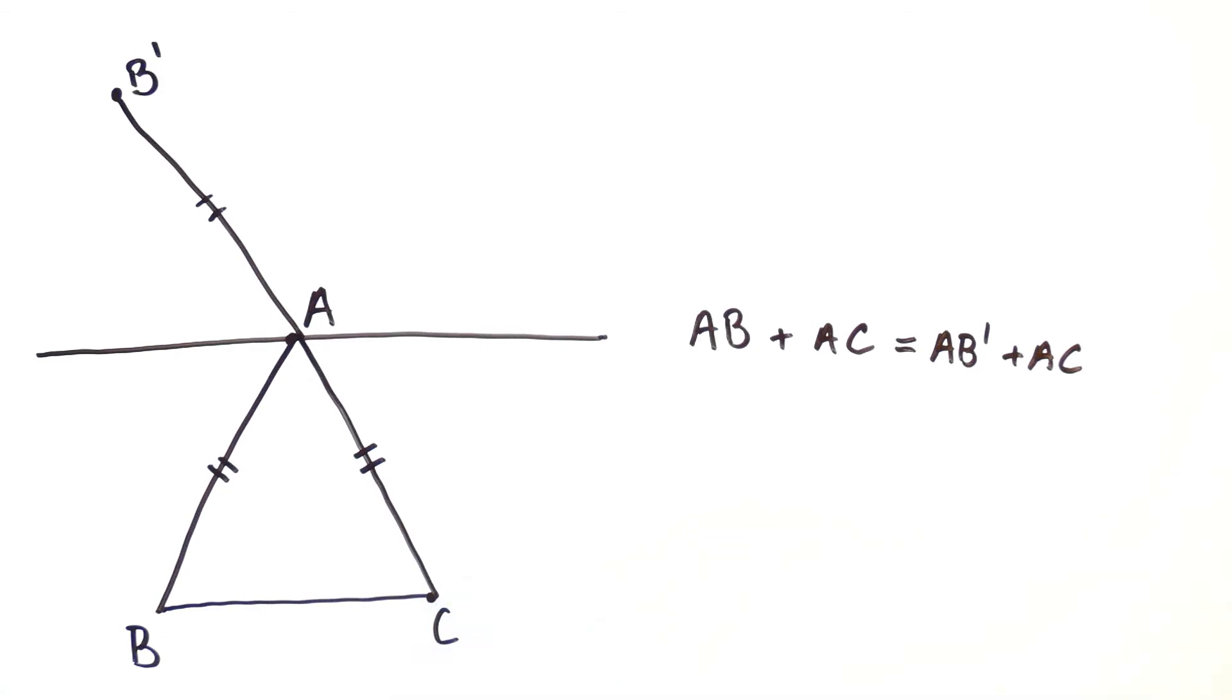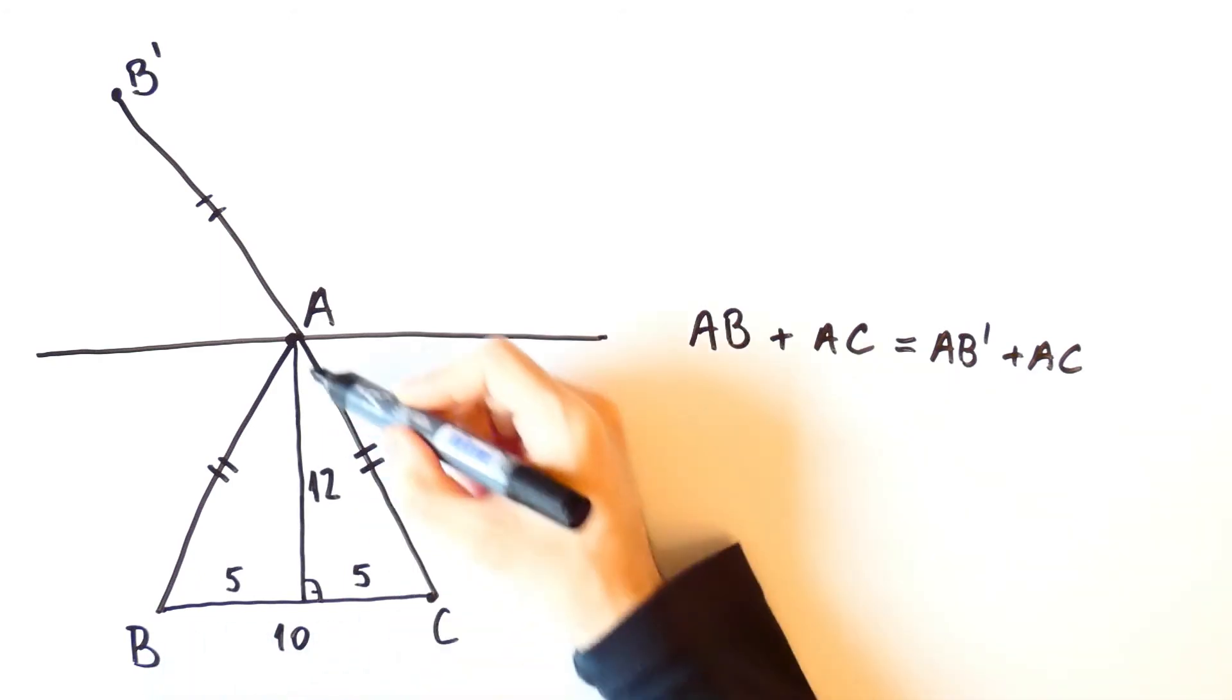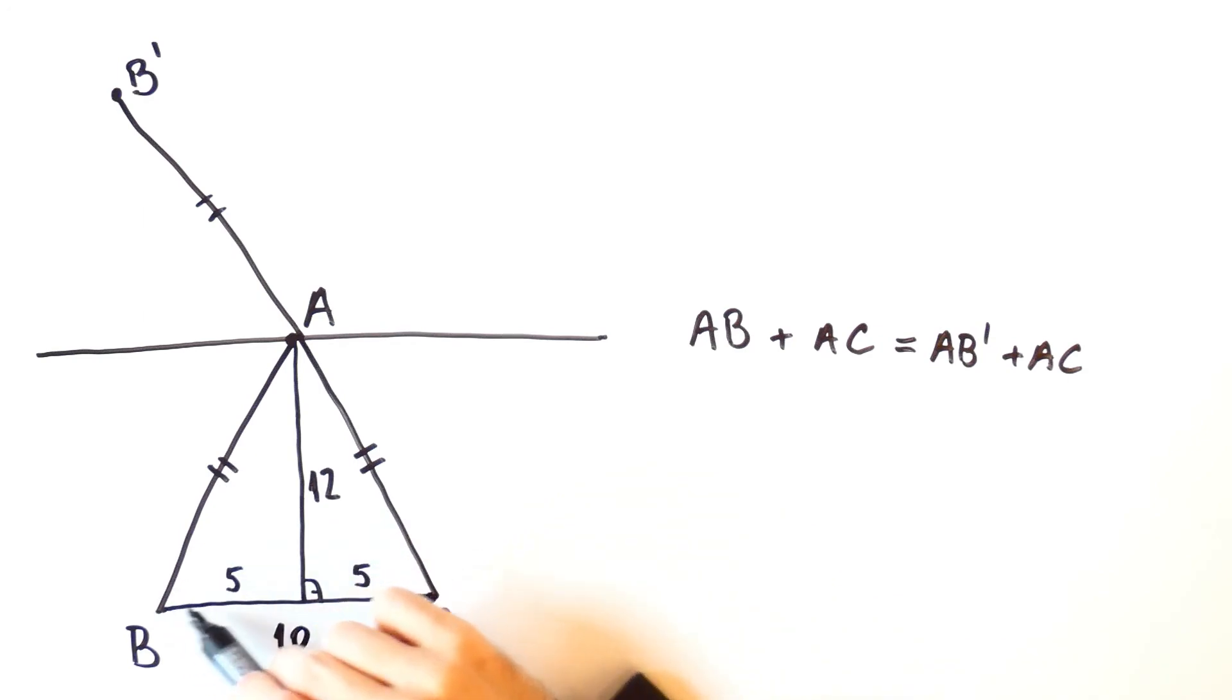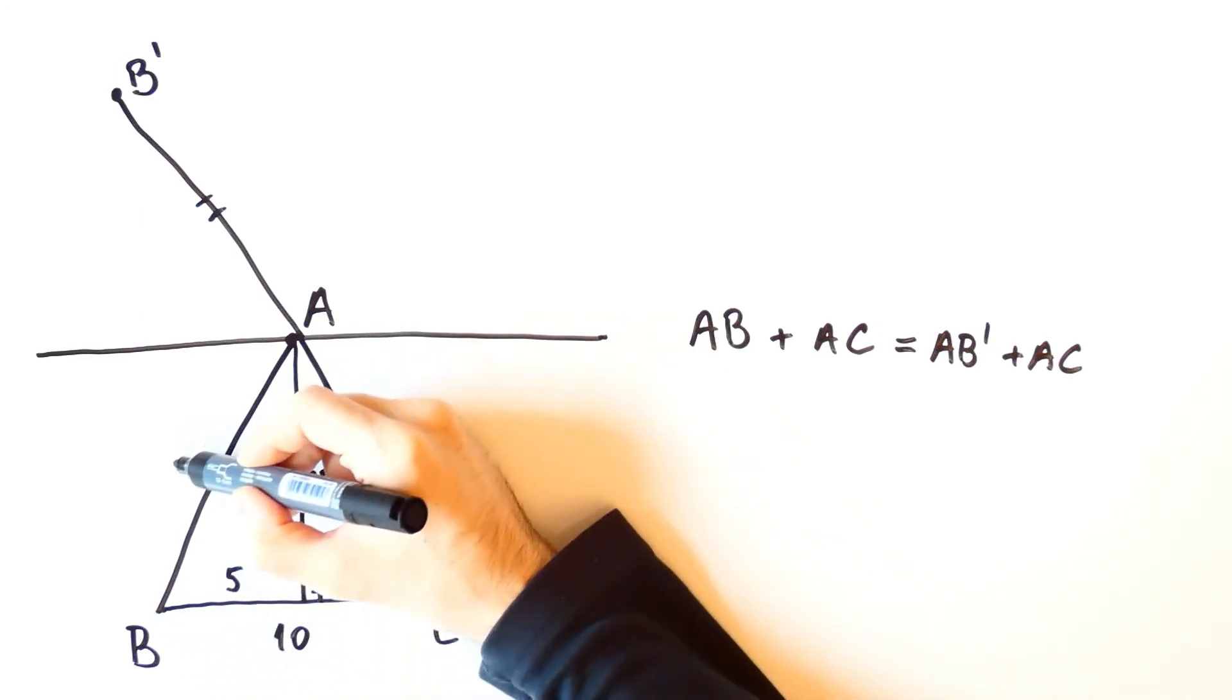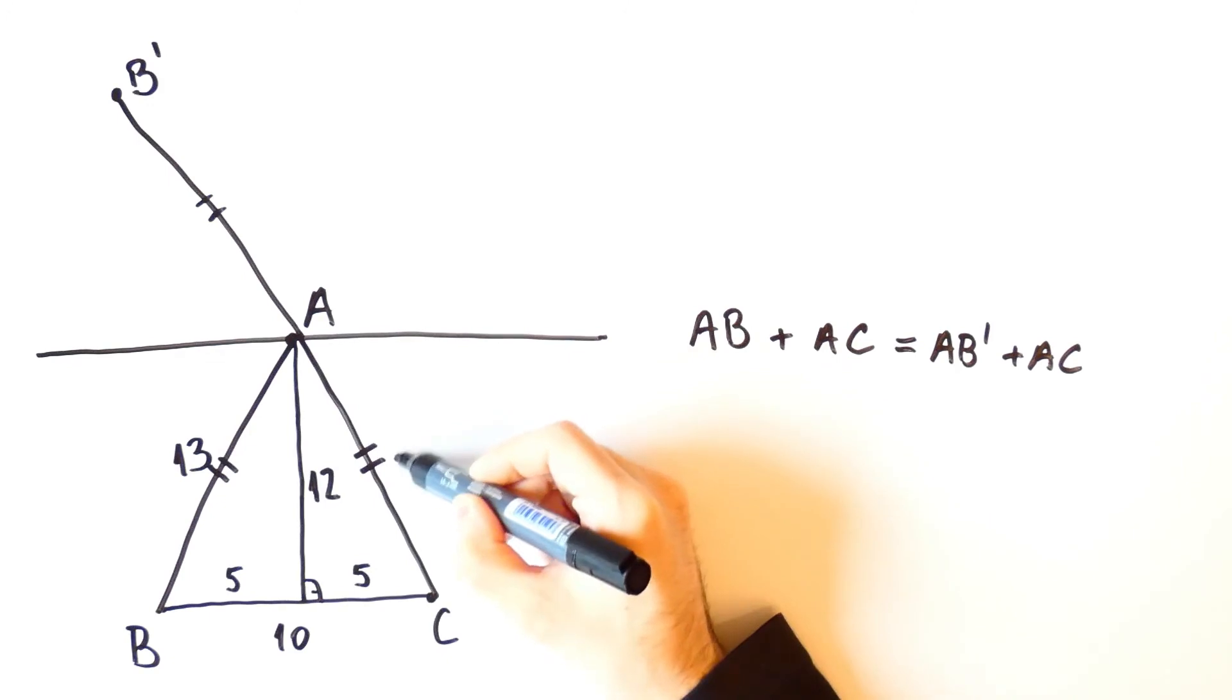But I leave it to you to verify that. In our problem BC is equal to 10 and the height is 12, and from the Pythagorean theorem we get that AB and AC are equal to 13.